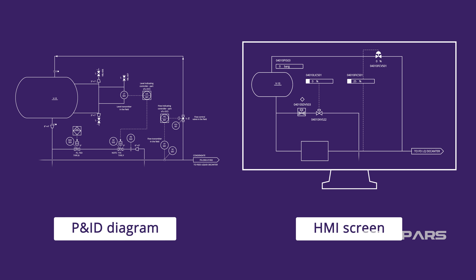Here's what the operator sees on the HMI screen. We put a big red circle around FIC501 and FCV501. As we discovered on the P&ID, the controller FIC501 is part of the DCS. FIC501 controller functions can be adjusted at the HMI by the operator. All FIC501 inputs and outputs can be observed in real time on the HMI as well.